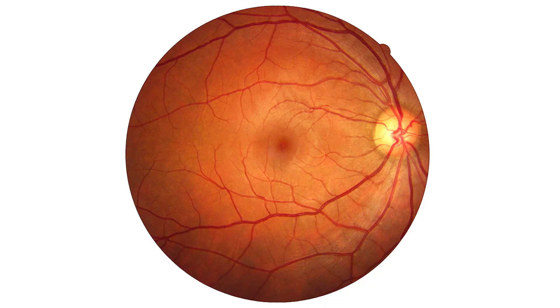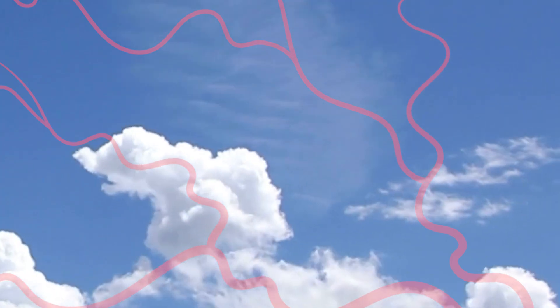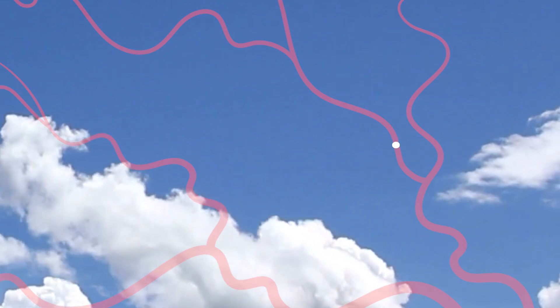The reason it's called the bluefield entoptic phenomenon — and why we tend to see it when looking at a blue sky or blue light — has a scientific explanation. You will most likely see these moving white spots when looking at a blue wavelength of light around 430 nanometers. Red blood cells passing through your arteries and veins absorb light best at 430 nanometers, and the retina underneath has already neurally adapted to the light shining through those blood vessels. So when a white blood cell passes and focuses that light through onto the photoreceptors, it appears as a white spot.